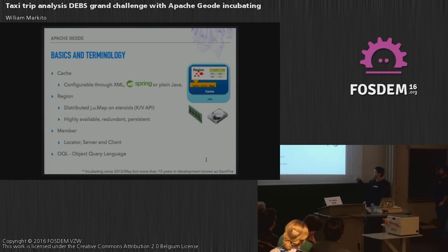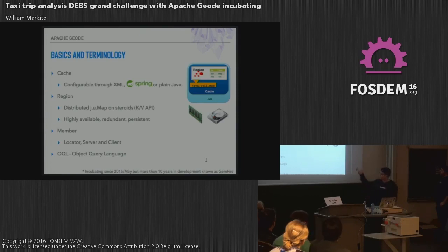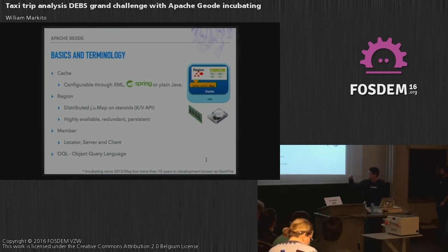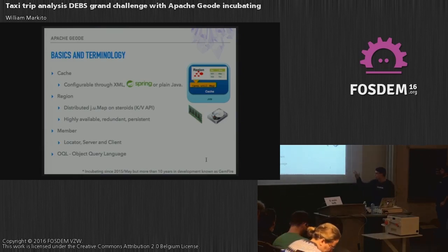A cache you can configure via XML, Spring, or Java. A region you can think of as a map on steroids — a hash map with a key-value store. It can be redundant and highly available, distributed across all the nodes in the cluster.